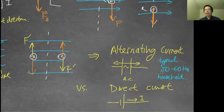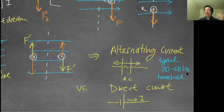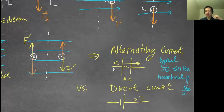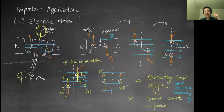Hertz means cycles per second — so 60 Hz means the current flips 60 times per second. You can change this frequency to make a motor go faster. If you plug an AC motor directly into a wall outlet, you get roughly 50–60 turns per second. Battery-powered devices use direct current; anything plugged into a wall uses alternating current.